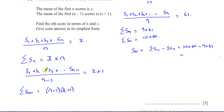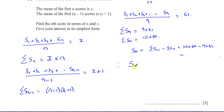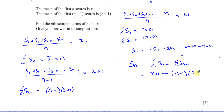Multiplying those gives you the sum of all those scores. The sum of the first n minus 1 scores is n minus 1 times x plus 1. Therefore, the nth score is going to be the sum of the first n scores minus the sum of the first n minus 1 scores. So it's going to be x times n minus (n minus 1) times (x plus 1).